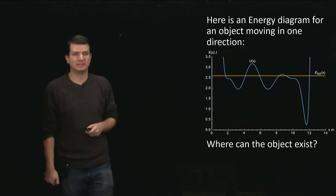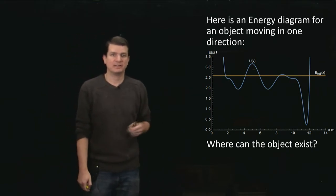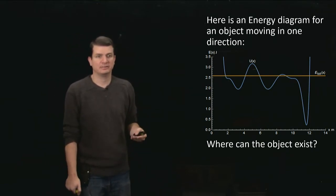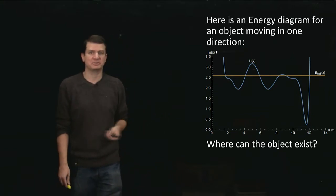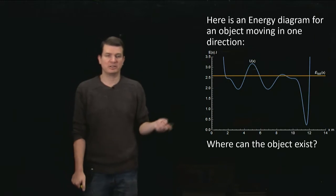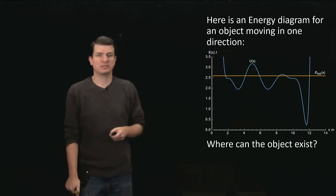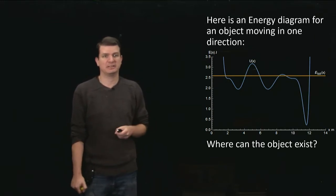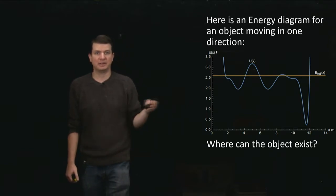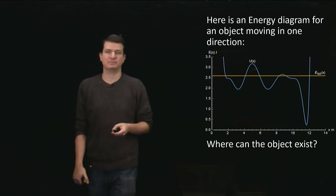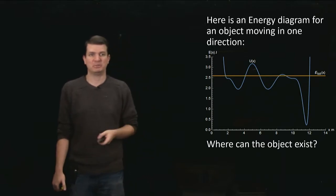So here on the right is an energy diagram. The y-axis is energy, and the x-axis is position. So it's just plotting energy as a function of position. And then we've plotted two curves. The orange one is just telling you that the total energy in the system is a fixed value, and the blue curve is telling you how the potential energy varies as a function of position. If you happen to be at that position, what potential energy do you have?